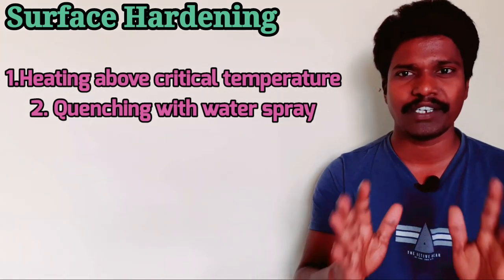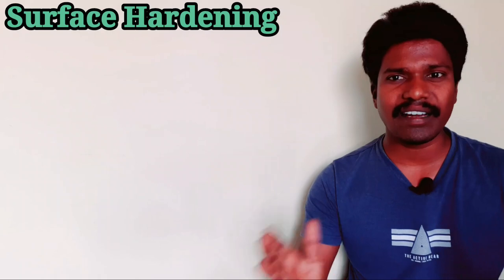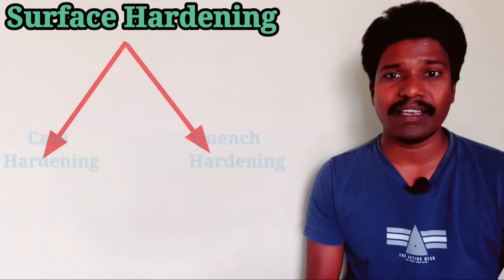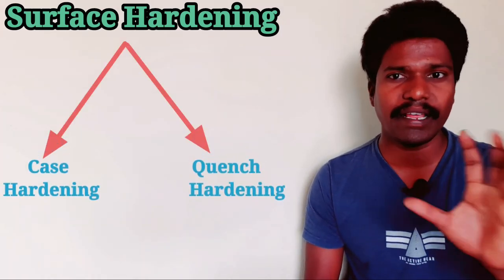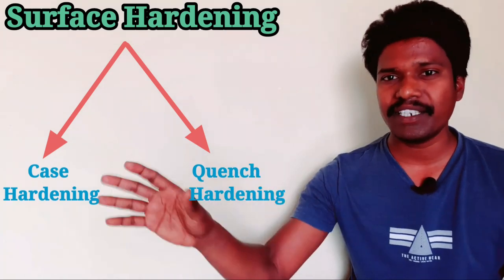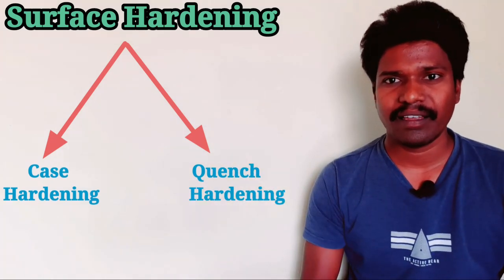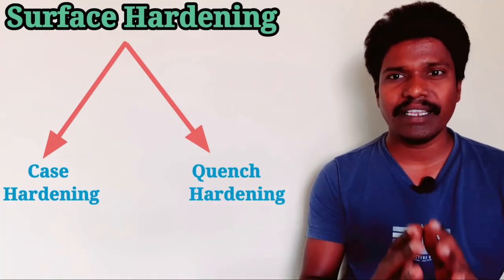Surface hardening is generally of two types. One is chemical heat treatment, which is case hardening. The second is quench hardening.